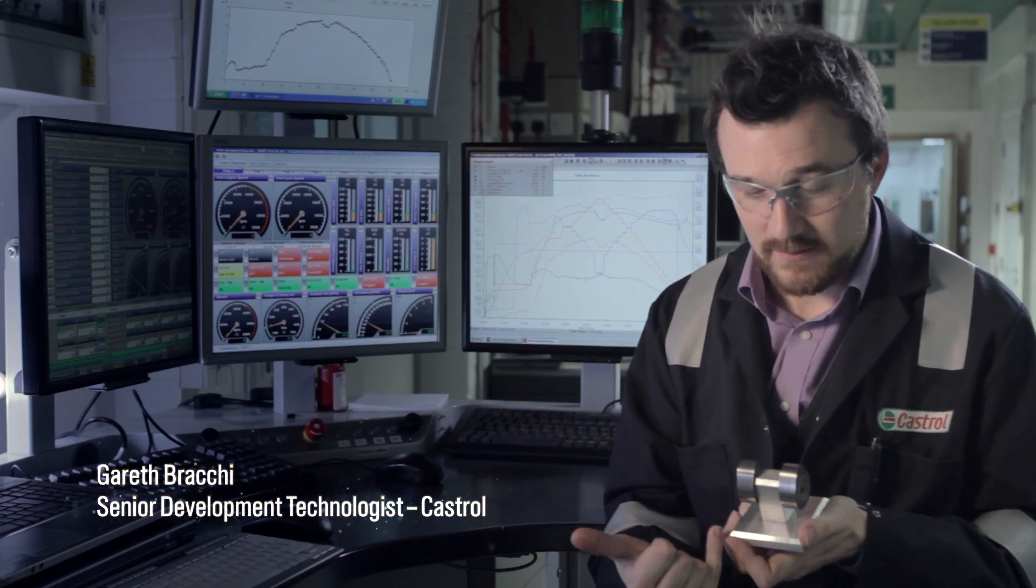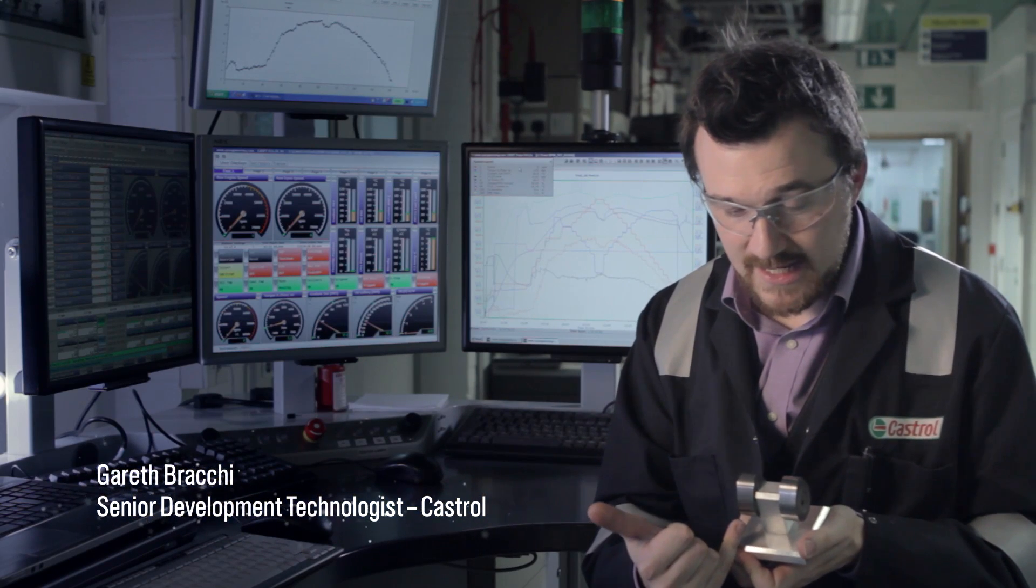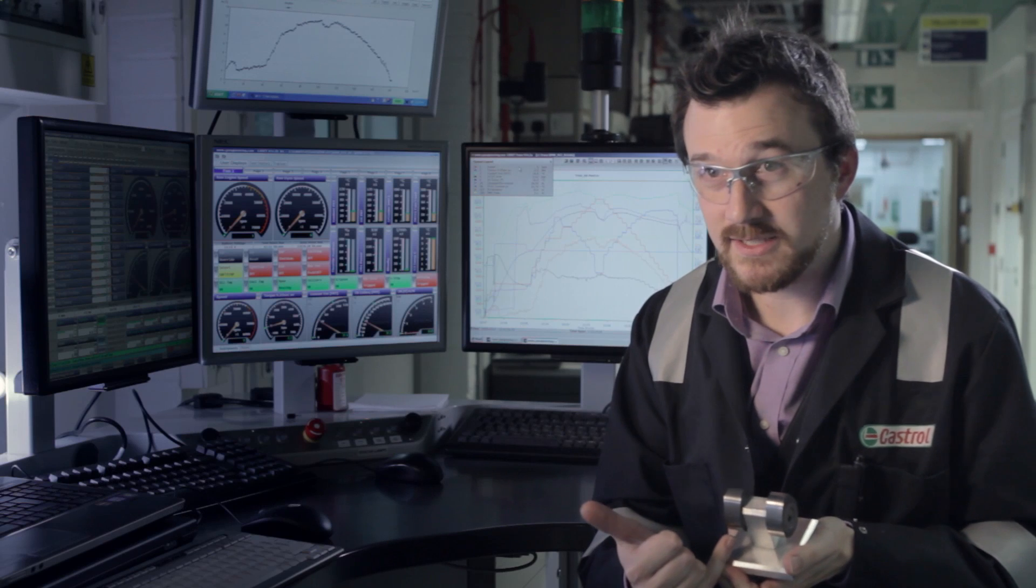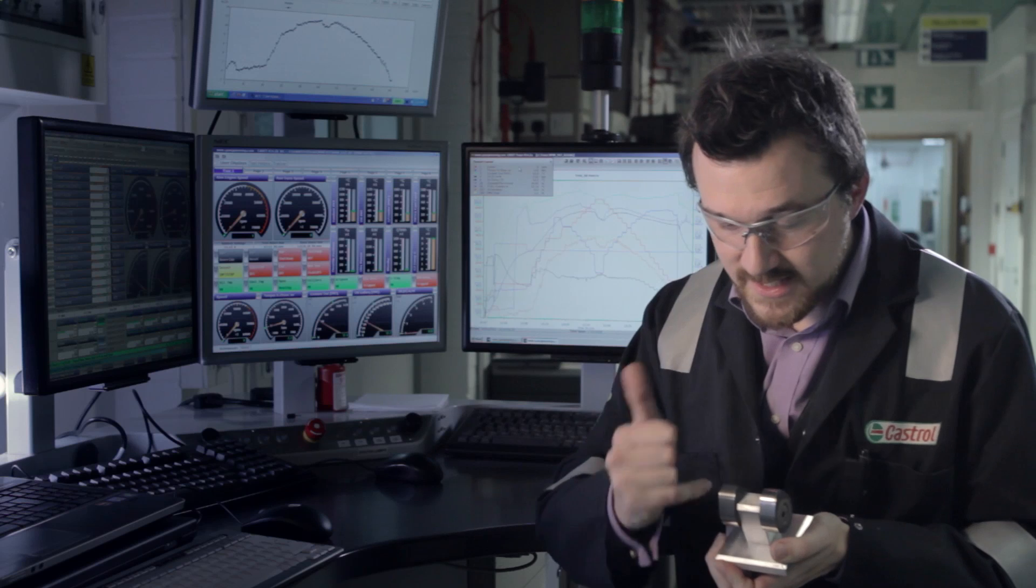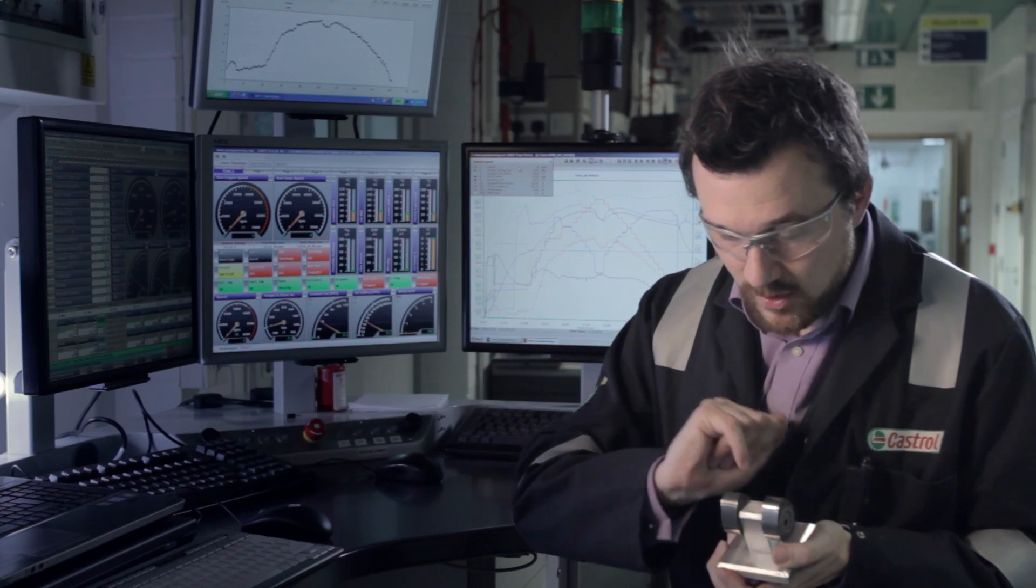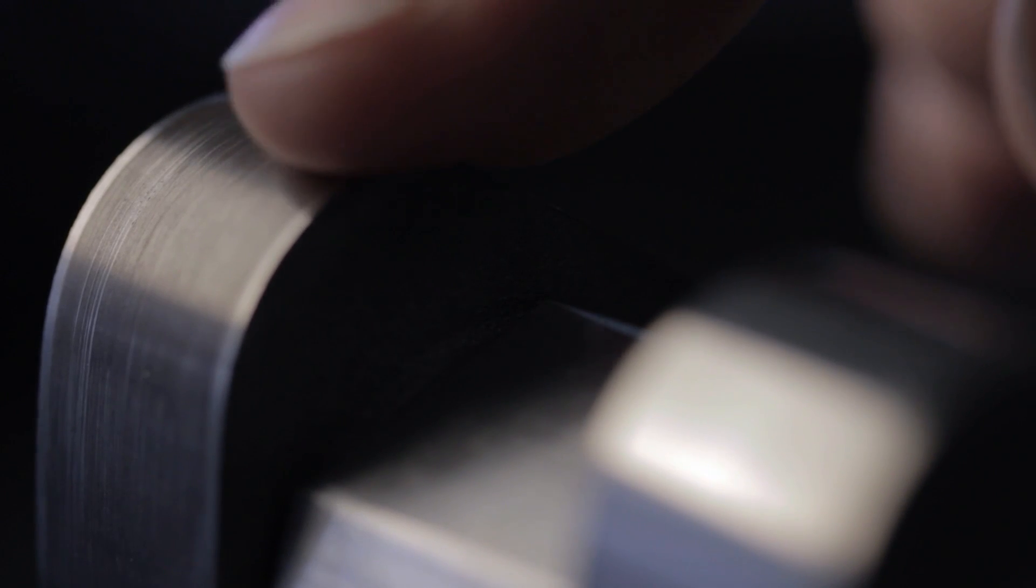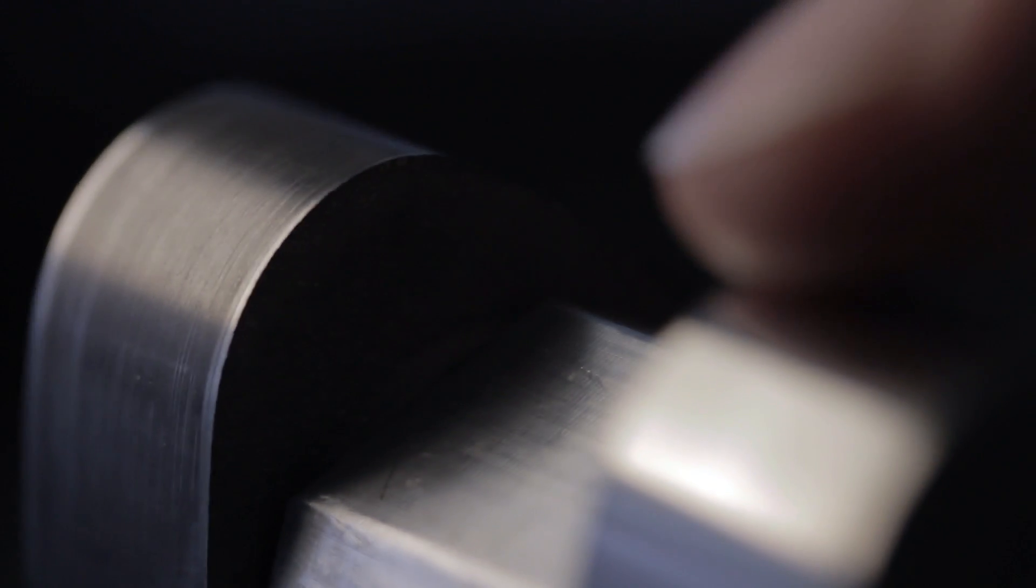These are the two engine test parts. This one has run without the intelligent molecules, and this one is Magnatec. And what you can see is real evidence of scratches, of abrasive wear, lots of damage there. And it's just not evident in the Magnatec cam. You've actually got a much smoother area where Magnatec has protected the components.